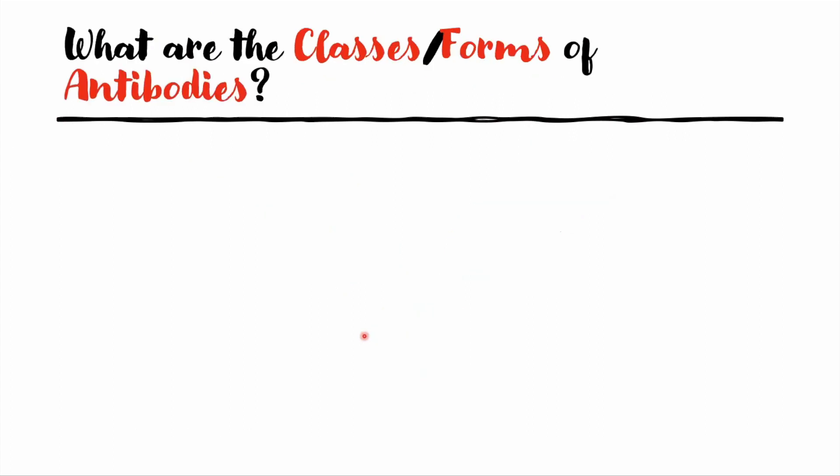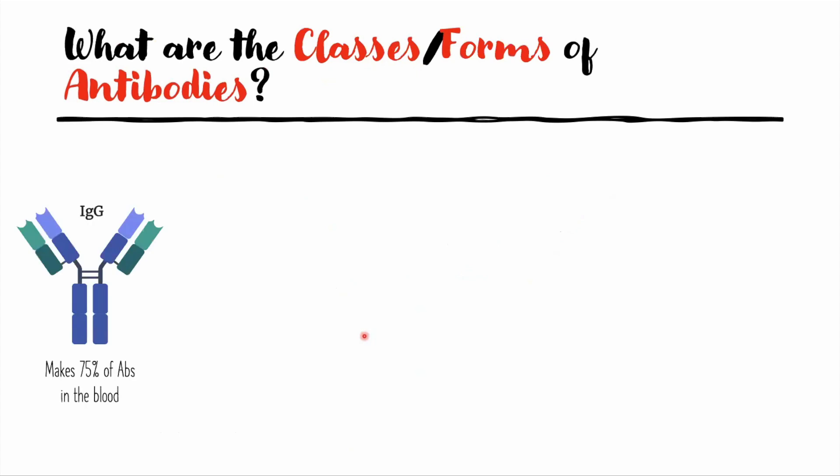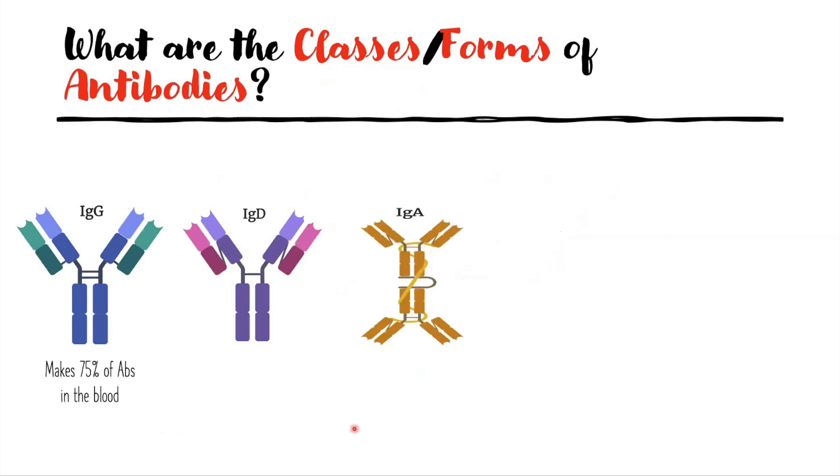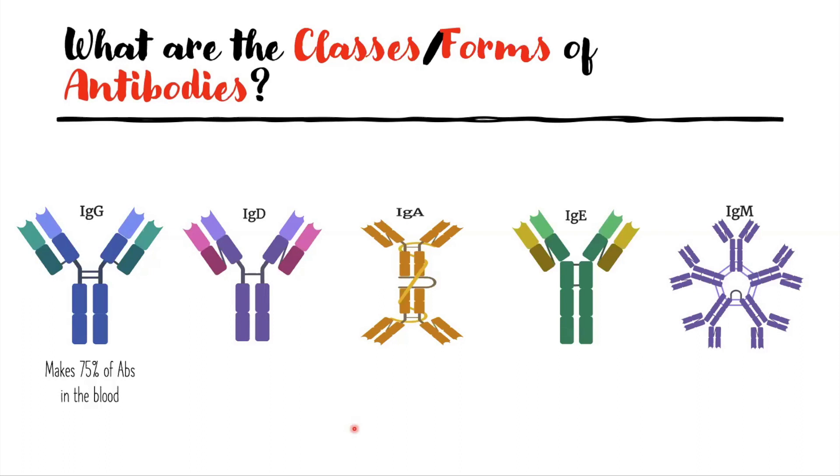So what are the antibody classes? There are five classes of antibodies: IgG, which makes up 75 percent of the antibodies in the blood; IgD; IgA; IgE; and IgM.